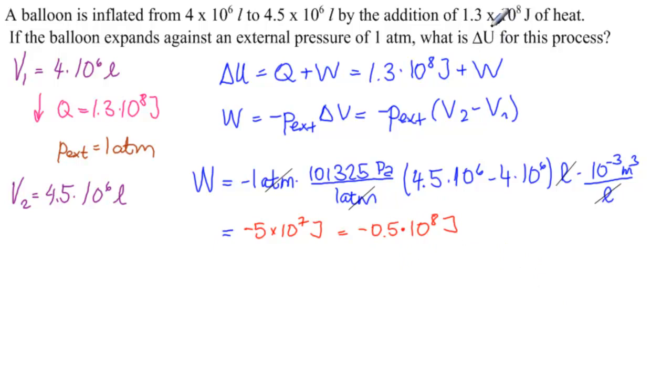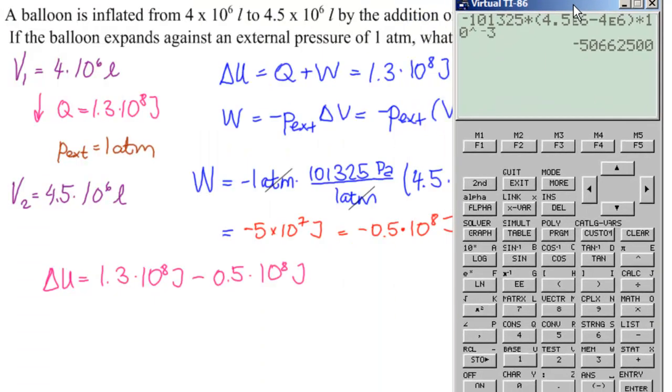and so we need delta U is Q plus W. So delta U is equal to 1.3 times 10 to the 8 joules minus 0.5 times 10 to the 8 joules. I'd get a calculator out. You can do whatever you want.